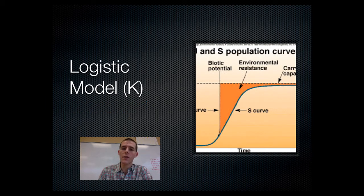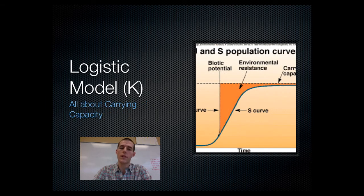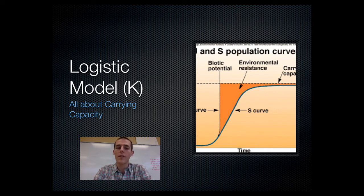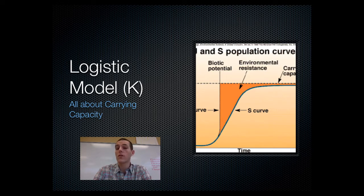The second growth model — and this is probably the more realistic growth model — is called the logistic model, or the K model, because it is based on the carrying capacity of an environment. The carrying capacity is the maximum number of organisms that an environment has the resources to sustain, and that is represented as K.